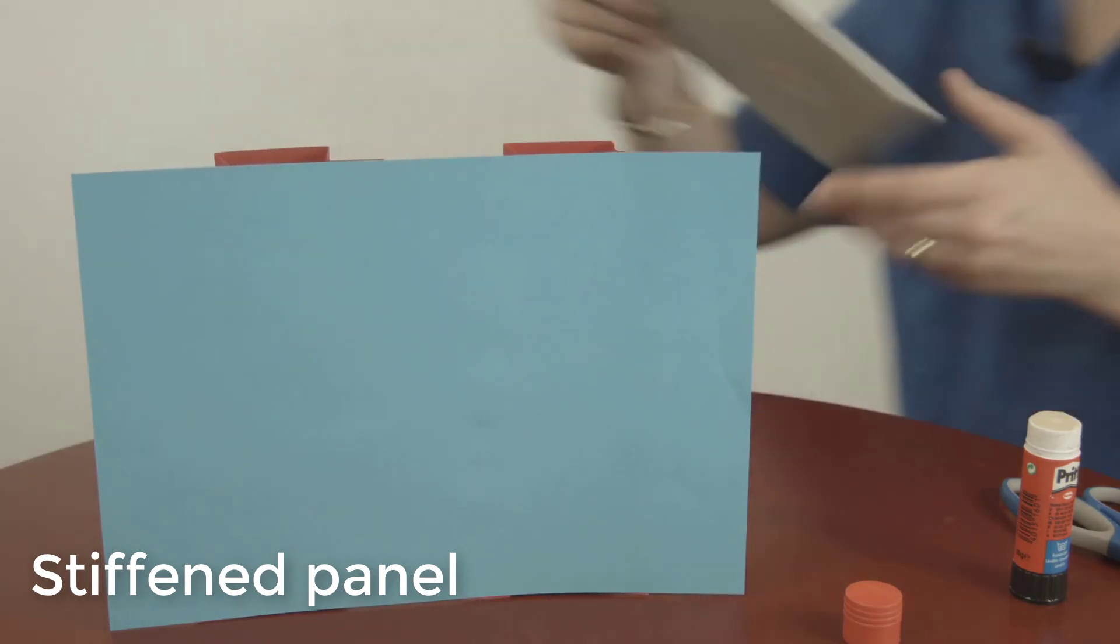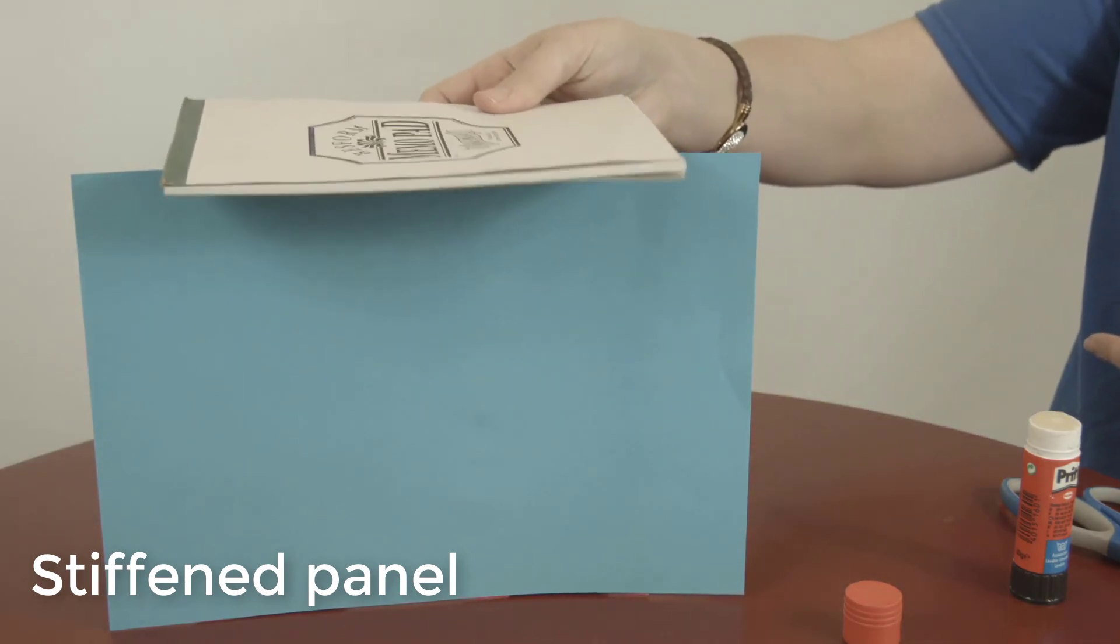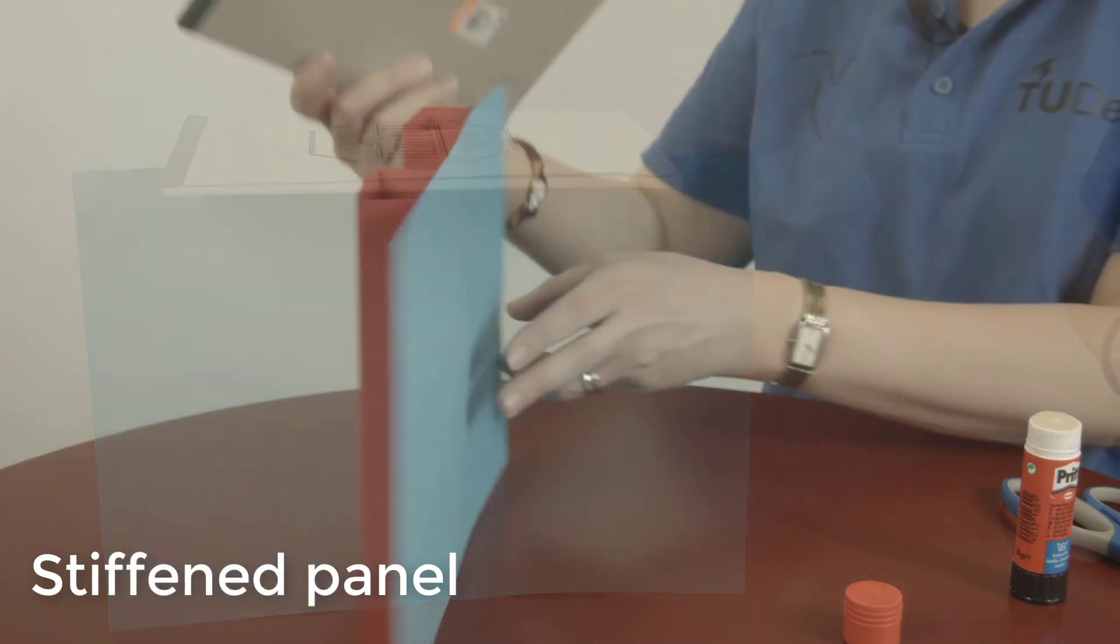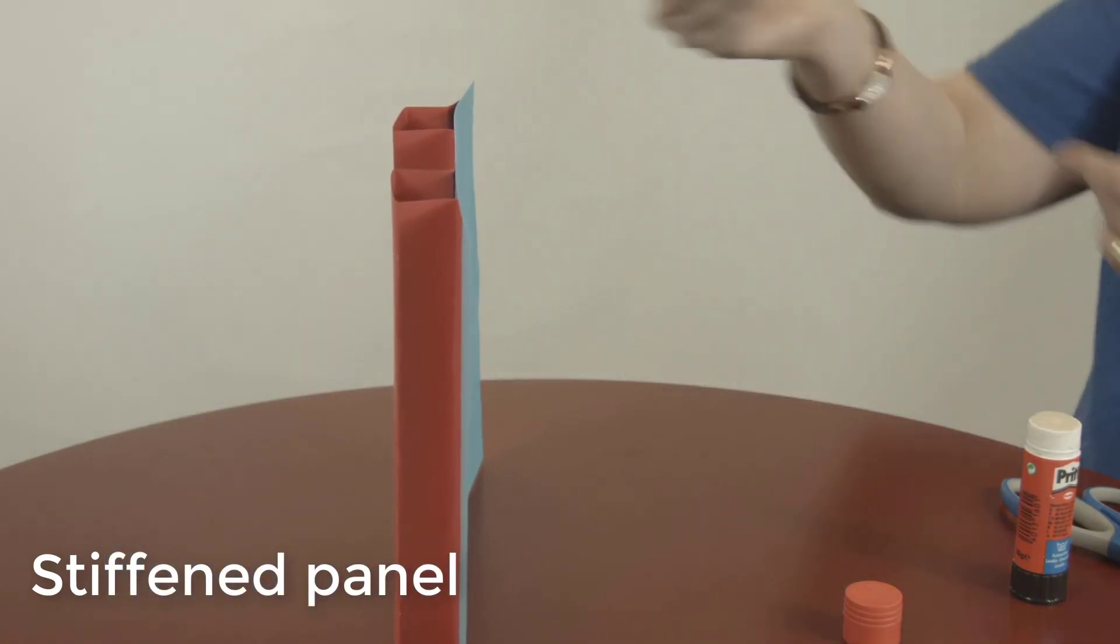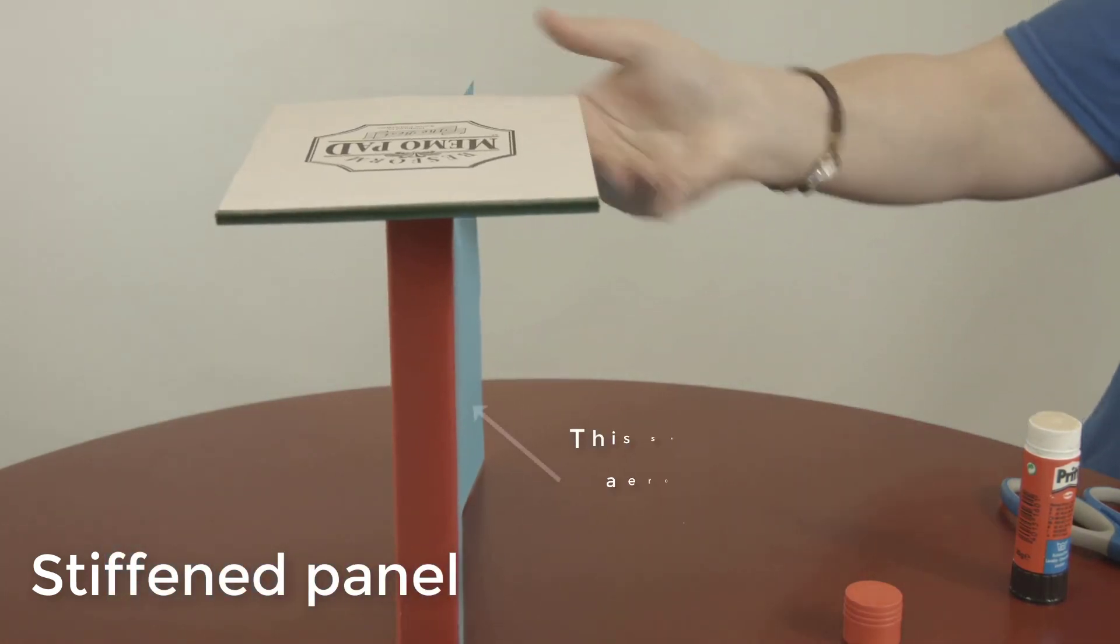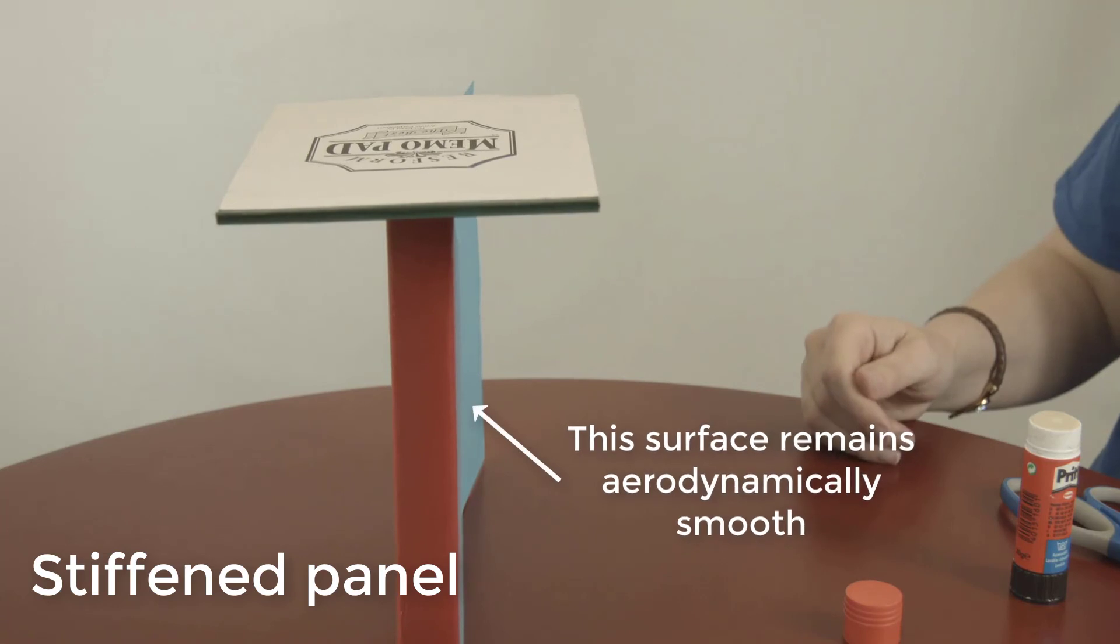Now let's evaluate our design. It meets the first requirement, that it withstands compression. It also meets the second requirement, because it does hold its shape, and if the stiffeners are placed on the inside of the structure, the outer surface remains smooth.